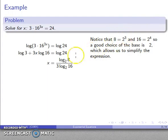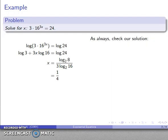I'll go ahead and fill that in: x is log to base 2 of 8 over 3 log to base 2 of 16. This allows us to simplify because the log to base 2 of 8 is the exponent 3, and the log to base 2 of 16 is the exponent 4. By substituting those in, I can simplify my expression to my final answer: x equals one quarter.